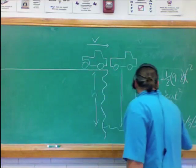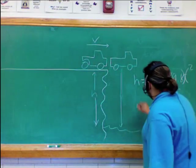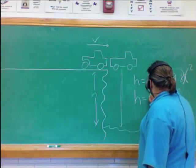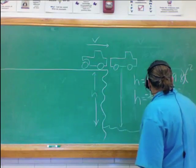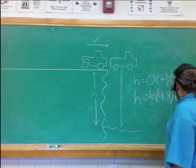That simplifies because anything times zero is zero. So, that simplifies to h is equal to negative one-half, 9.8 t squared.